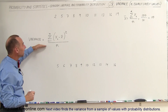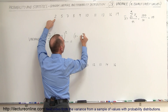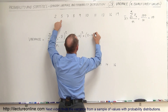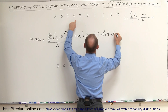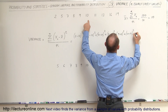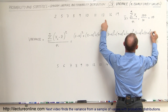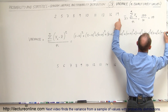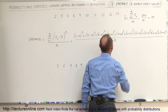Now we can calculate the variance. We take the first value, 2, minus the average 10, square that number; add to that the next number 5 minus 10 squared; plus 7 minus 10 squared; plus 8 minus 10 squared; plus 9 minus 10 squared; plus 10 minus 10 squared; plus 11 minus 10 squared; plus 13 minus 10 squared; plus 16 minus 10 squared; plus 19 minus 10 quantity squared. We sum them all up and divide by 10.